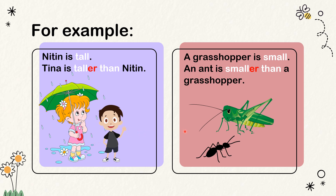In the next picture, we see a grasshopper is small. An ant is smaller than a grasshopper. A grasshopper is small, but this ant is smaller than the grasshopper.